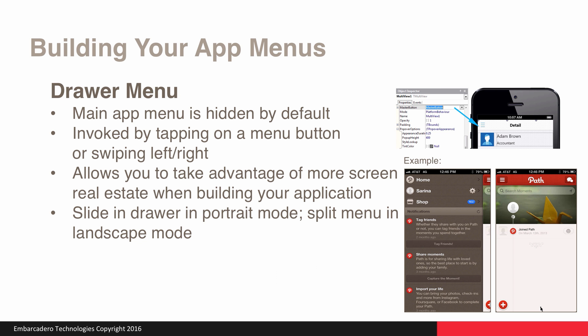The Drawer menu is another very popular application menu seen in many apps today. It's a main app menu that's hidden by default and invoked via the hamburger icon. It allows you to take advantage of more screen real estate by hiding the application menu and only showing it when invoked. By default on phone form factors, the slide-in drawer is shown in both portrait and landscape mode, and on tablet form factors, a split menu is shown in landscape mode.